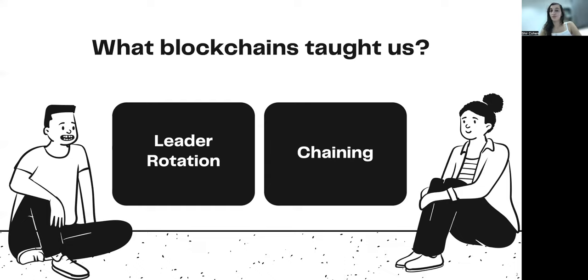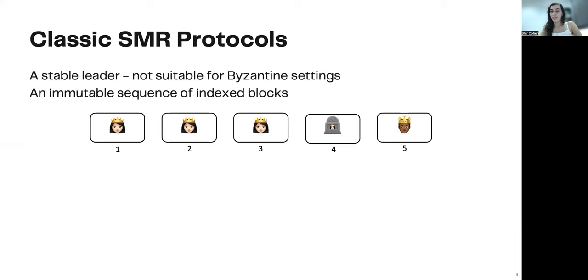With the introduction of blockchain systems, two new important concepts emerge to the traditional state machine replication settings: leader rotation and chaining. In classic state machine replications, we are attempting to create an immutable sequence of indexed blocks. We do it by having a stable leader proposing a block, and all other parties trying to agree upon it. This process repeats for each slot. Once the leader is expected to be faulty, like here at slot 4, it is replaced by a new one. As some of you may notice, this classic approach is not suitable in the presence of Byzantine parties, as a Byzantine leader may prevent the existence of any block proposed by an honest party. This property is usually called chain quality, bounding the number of Byzantine blocks in a sequence.